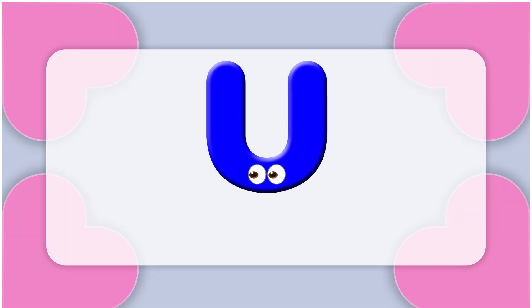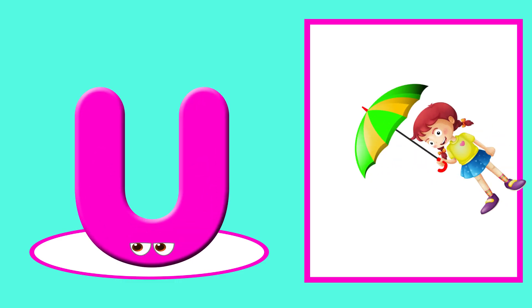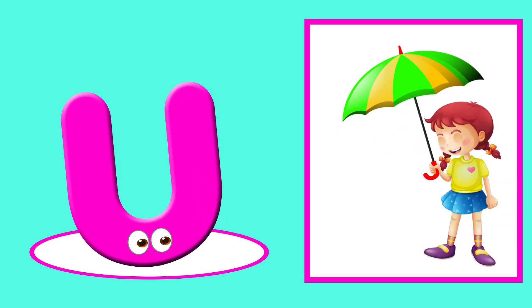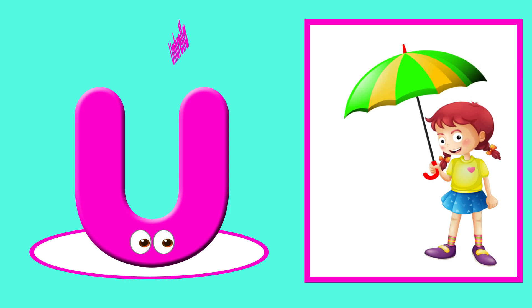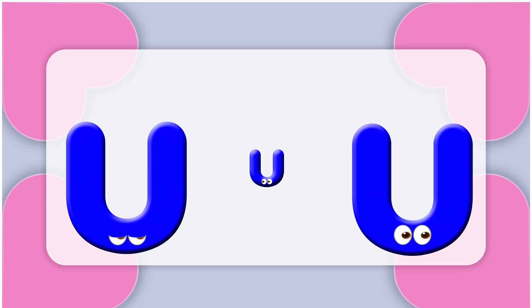This is the letter U. U is for umbrella — umbrella. U is for uncle — r, r.